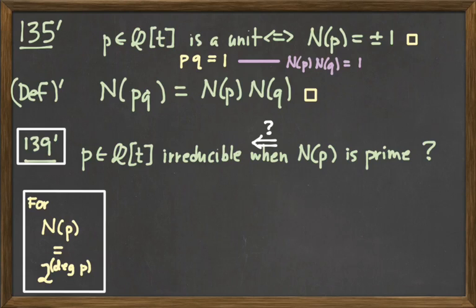But for this norm, norm of P equals 2 raised to the power of degree of P, what kind of numbers do we get out of 2 raised to the power of degree of P? Where do those numbers live? They're integers. They're better than rational numbers. They're integers, for sure. And so I have a product of 2 integers, which is equal to 1.